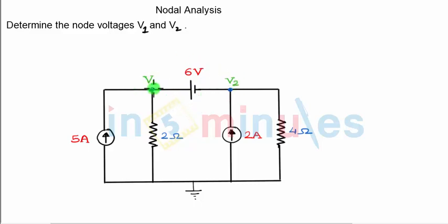So when this is the case you can't write V1 equal to six volts or V2 equal to minus six volts just because the positive terminal of six volts is at V1 and negative terminal of six volts is at V2.